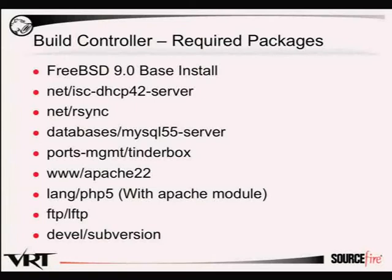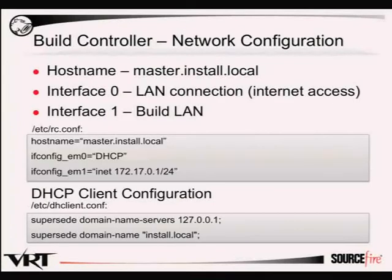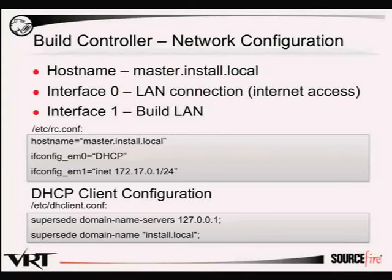The build controller has a fairly small package list: a lightweight 9.0 base system with DHCP server, MySQL for Tinderbox, Apache to serve the Tinderbox packages and monitor builds, LFTP for Tinderbox, Subversion to get the FreeBSD admin codebase, and rsync for copying files around. We give the build controller two interfaces — one on our LAN for SSH access and a second on the build virtual segment.